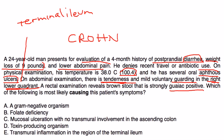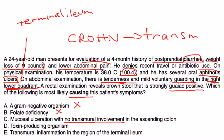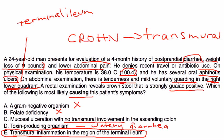Going through the answer choices: gram-negative organisms have nothing to do with Crohn's disease; folate deficiency does not cause it; mucosal ulceration with no transmural involvement is incorrect because Crohn's involves the full thickness of the bowel — it is transmural; and a toxin-producing organism would typically just cause watery diarrhea. By elimination, the correct answer is transmural inflammation involving the terminal ileum, consistent with Crohn's disease.